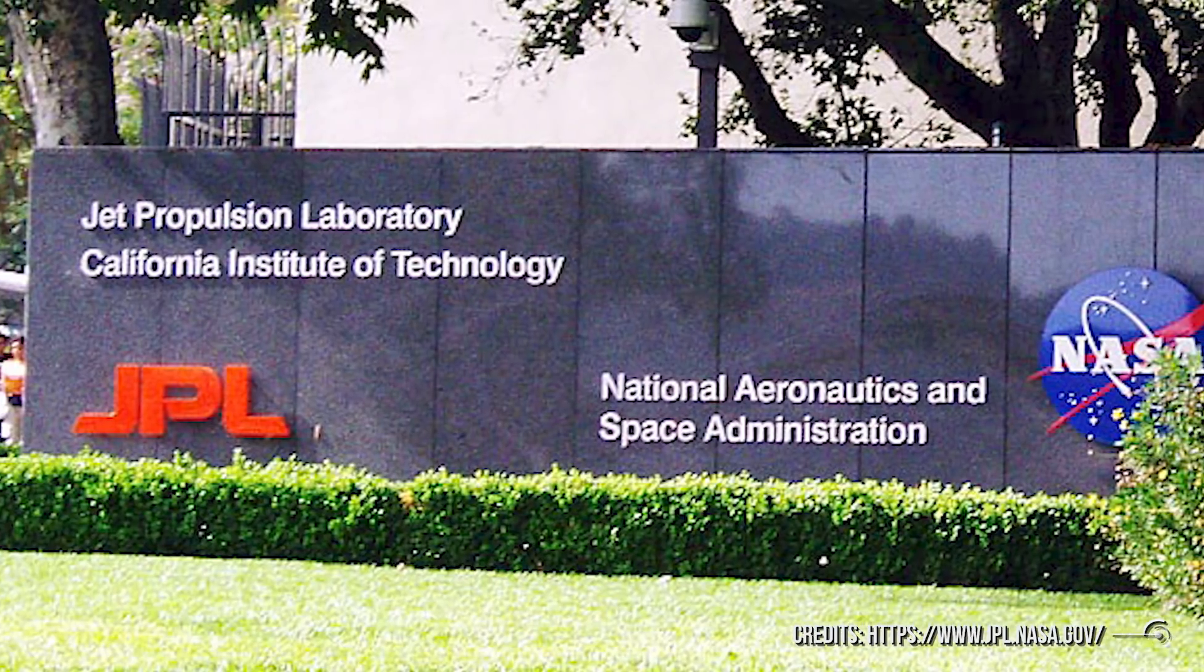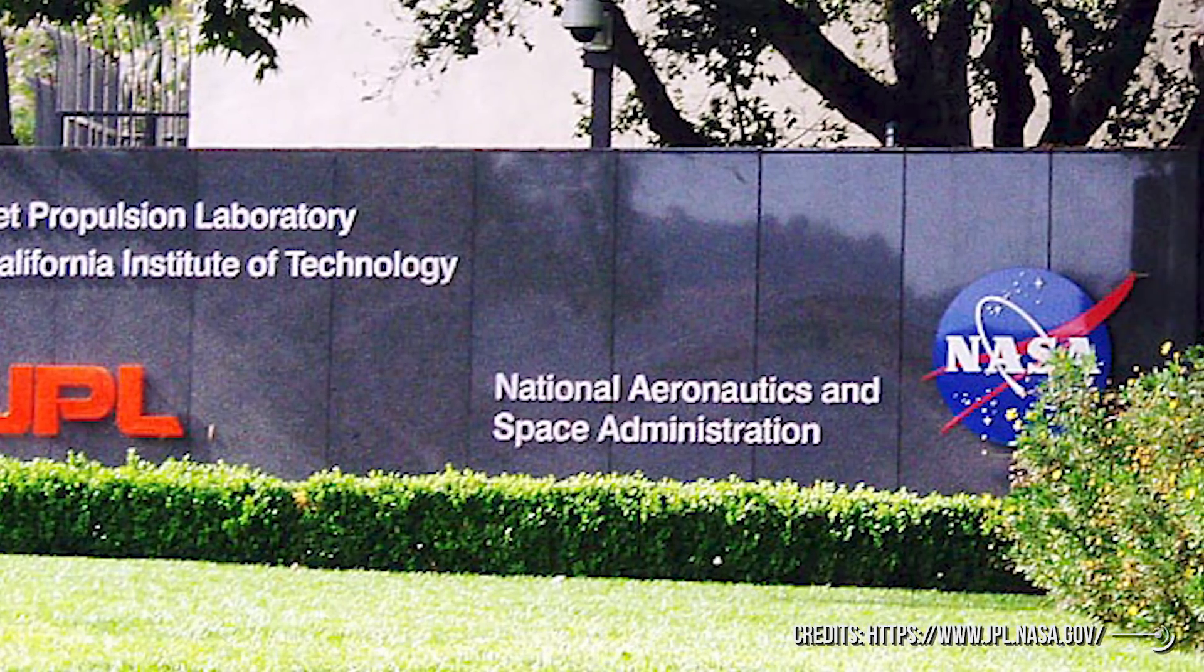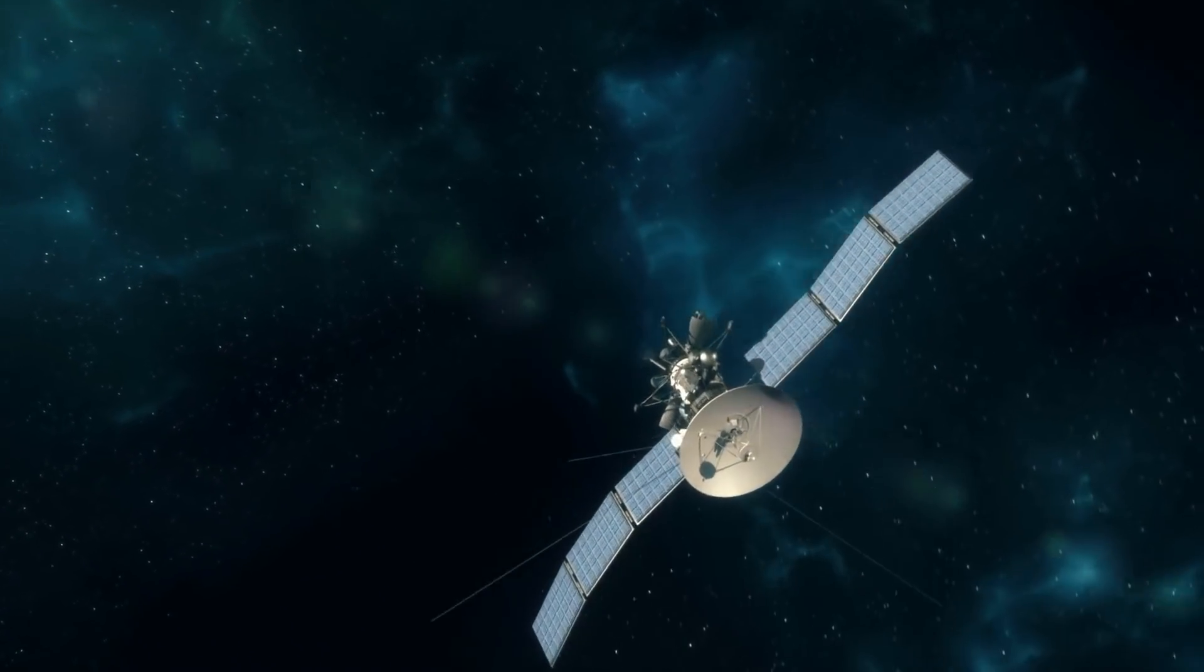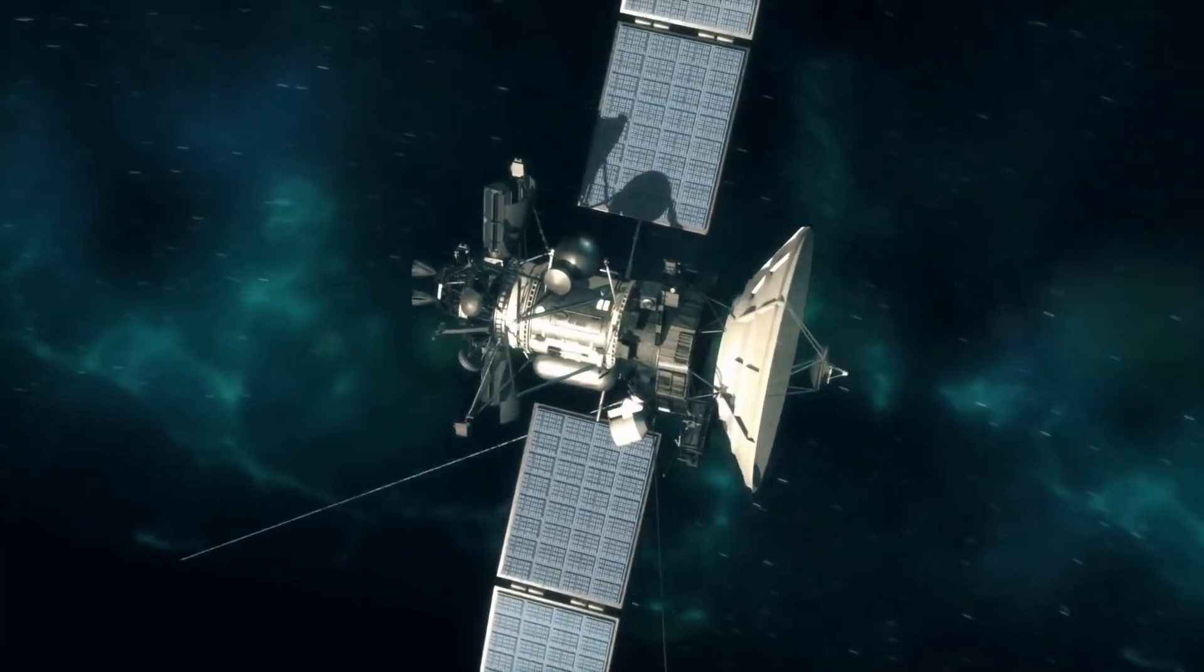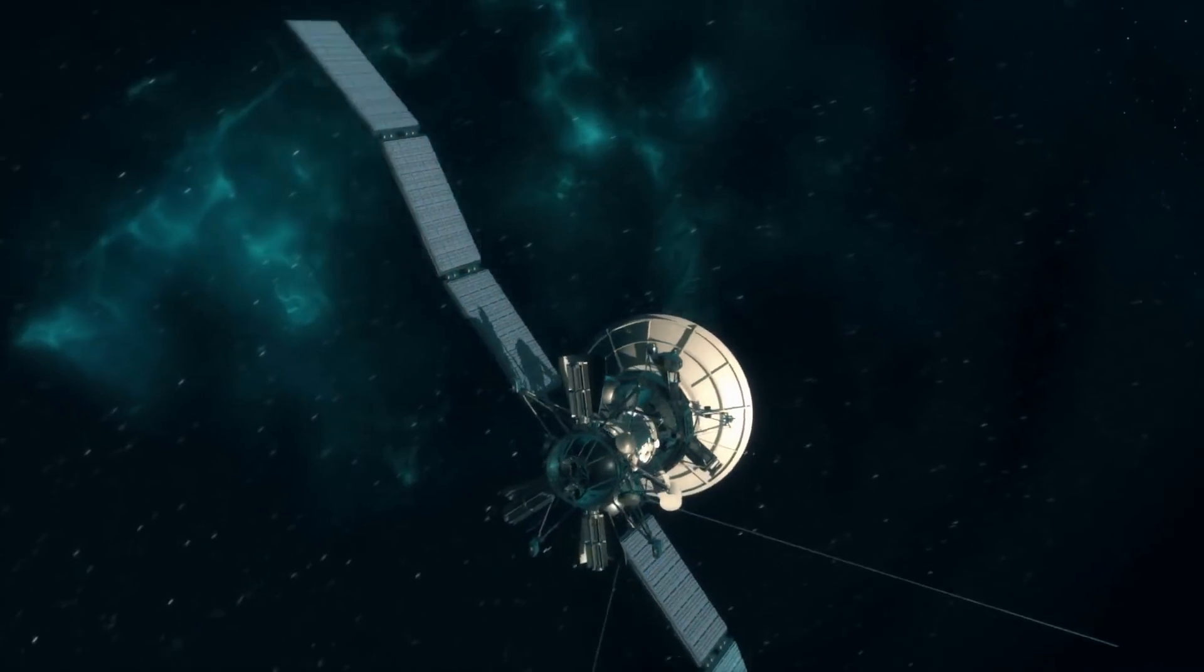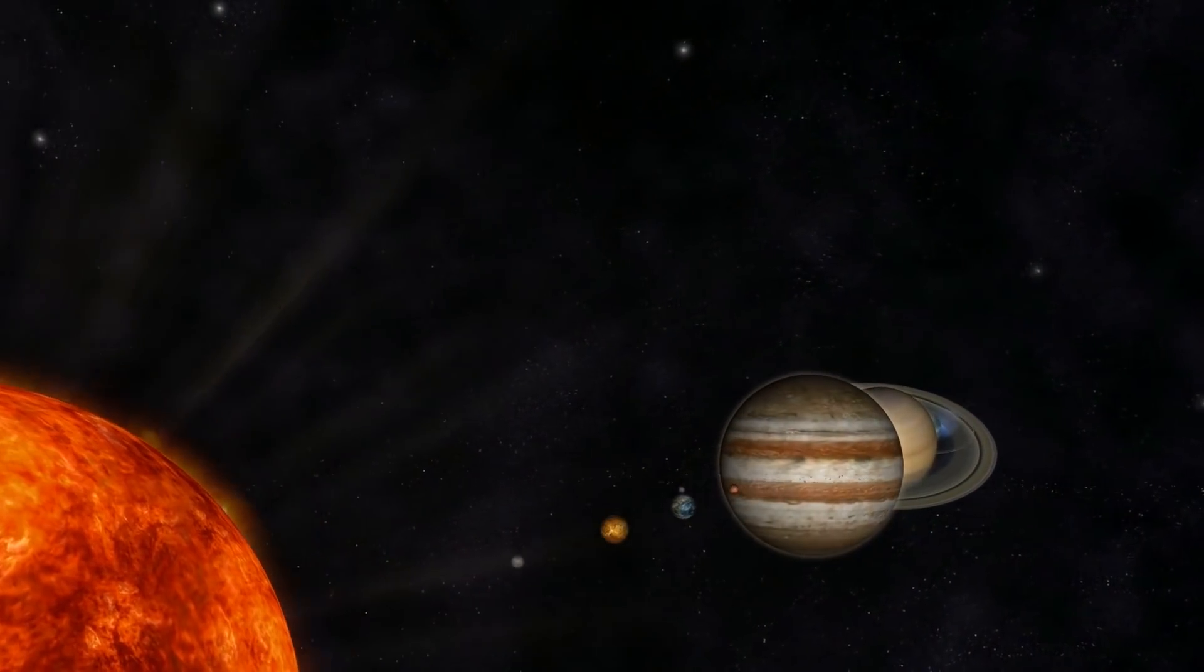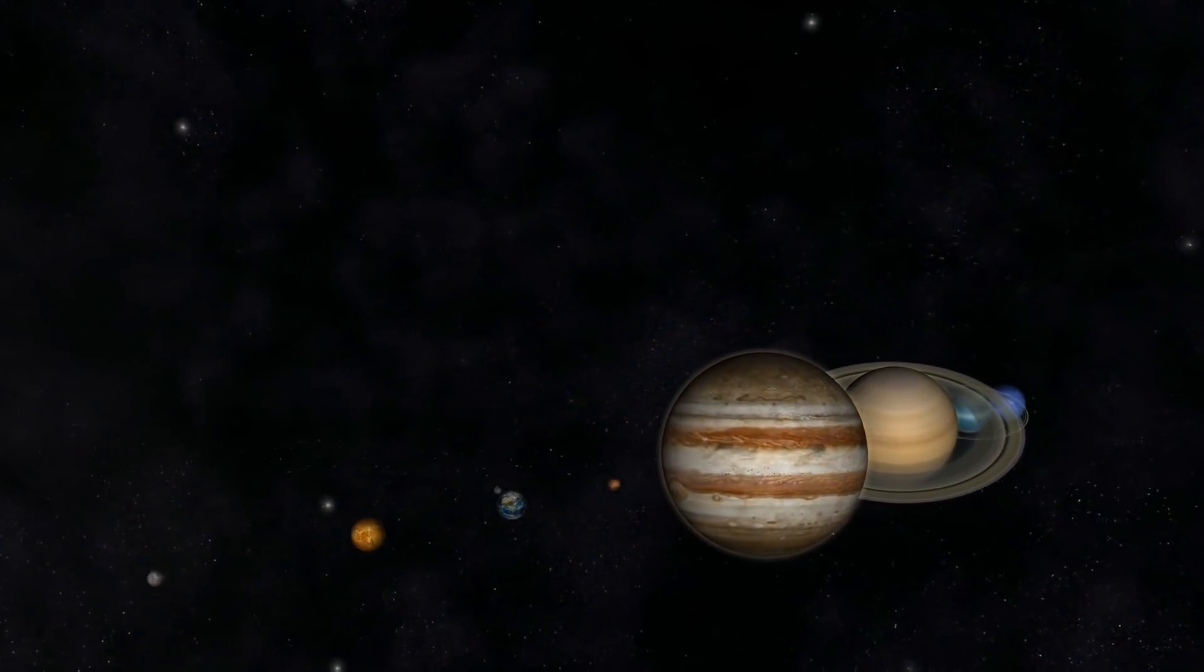Pasadena, USA, summer 1964, at the Jet Propulsion Laboratory. In view of future space missions conducted with automatic probes, the young aerospace engineer Gary Flandreau is assigned the task of studying new trajectories for the exploration of the external solar system.